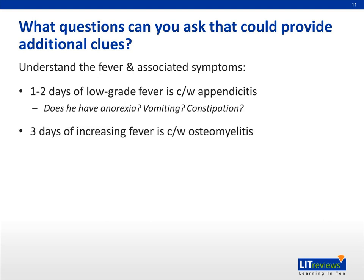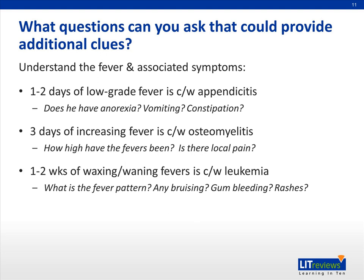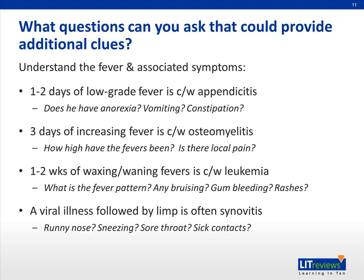If you heard about three days of increasing fever, this would be most consistent with osteomyelitis — you'd want to ask how high the fever has been and whether there is localized pain, inflammation, or redness. If you learned that he'd had one to two weeks of waxing and waning fever, this might be consistent with leukemia, and so you'd want to ask about the fever pattern, bruising, gum bleeding, rashes, or other associated symptoms. And if, as in this case, he had viral symptoms before he developed his limp, this might be consistent with synovitis — so you would ask about a runny nose, sneezing, a sore throat, or anybody else in the household or at school who had been sick.